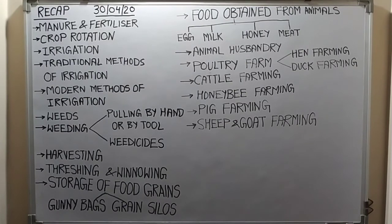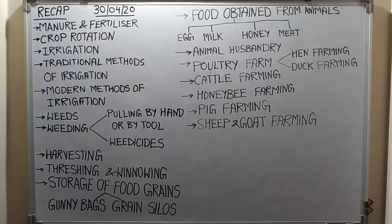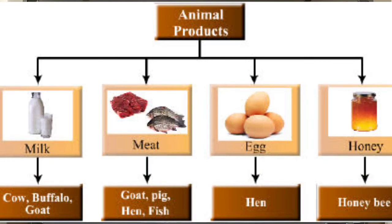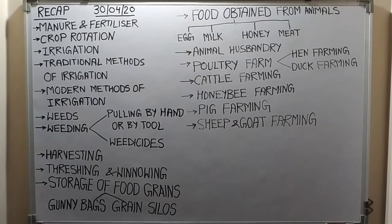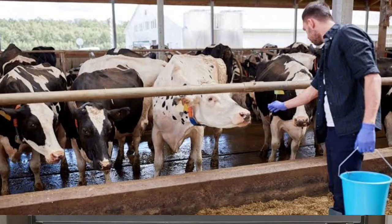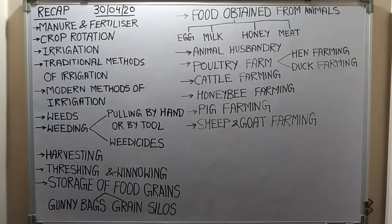The last topic of our chapter is food from animals. We are getting food from both plants and animals. From animals we get: milk from cow, buffalo, and goat; meat from goat, pig, and hen; eggs from hen and duck; and honey from honey bees. For this we have to do animal husbandry. Animal husbandry is a branch of agriculture that deals with the feeding, shelter, health, and breeding of domestic animals. Cows and buffaloes are given proper shelter in cattle farms for their milk.